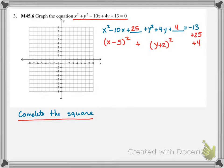Only x minus 5 quantity squared will result in x squared minus 10x plus 25. Similarly, only y plus 2 quantity squared will result in y squared plus 4y plus 4. So now these are equivalent.